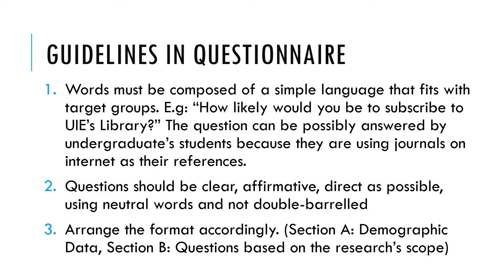Guidelines in questionnaire. First, words must be composed of simple language that fits with target groups. For example: 'How likely would you be to subscribe to UIE's library?' — this can be answered by undergraduate students because they use journals on the internet as their references. Second, questions should be clear, affirmative, and as direct as possible, using unambiguous words without double meaning. Lastly, arrange the format accordingly: Section A for demographic data, Section B for questions based on research scope, and Sections C and D based on what you are researching.